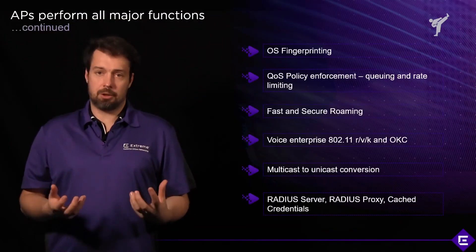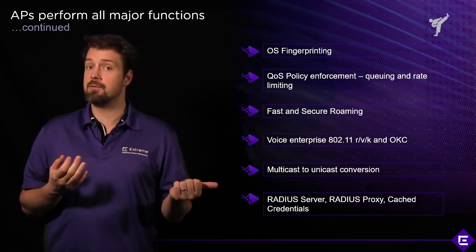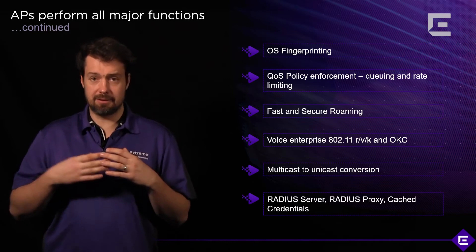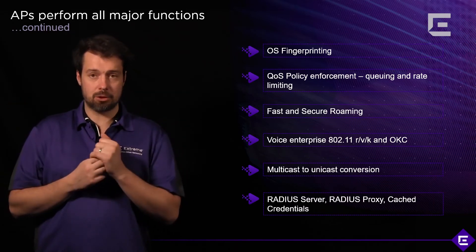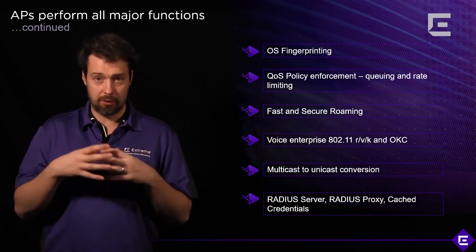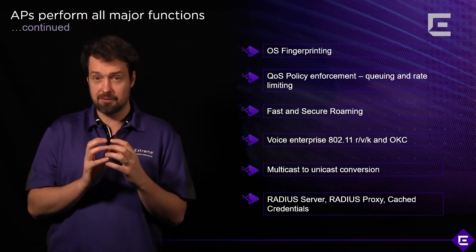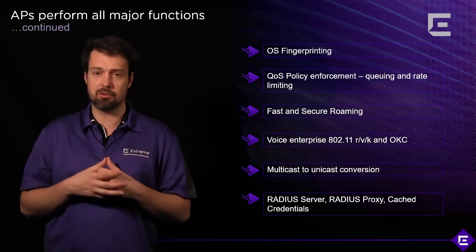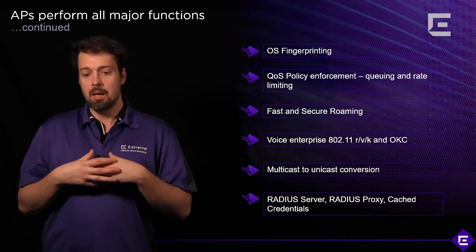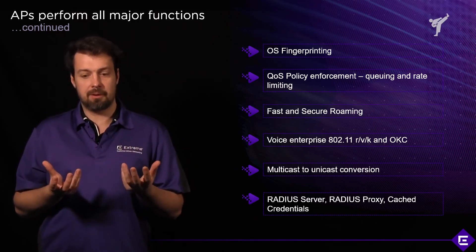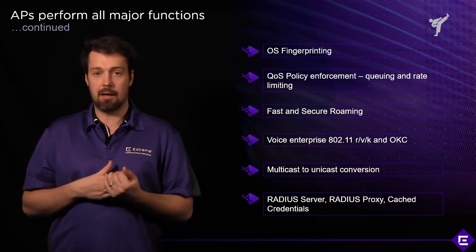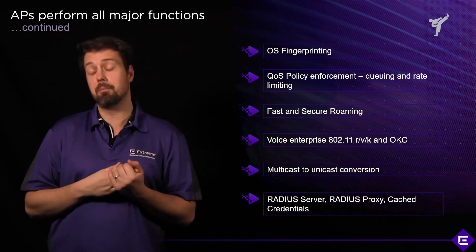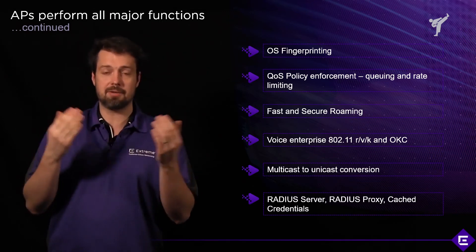Some of the other functions performed by the APs themselves is operating system fingerprinting. Based on things like DHCP exchanges or HTTP exchanges, we're able to determine what kind of operating system is running on a client device, and you can use that information to implement network access control in Extreme Cloud IQ. You can also implement QoS policy enforcement like queuing and rate limiting — for example, limiting guest users to a specific data rate while giving more bandwidth to enterprise users.